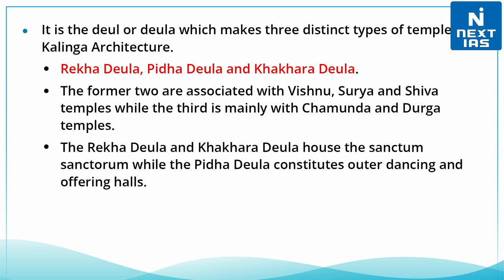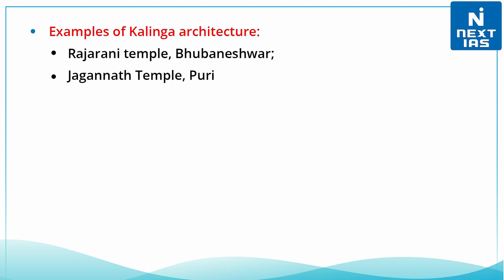The Rekha Deula and Khakra Deula house the sanctum sanctorum or Garbhagriha, while the Pidha Deula constitutes the outer dancing and offering halls. Certain examples of Kalinga architecture include the Rajrani temple in Bhubaneswar and the Jagannath temple of Puri.